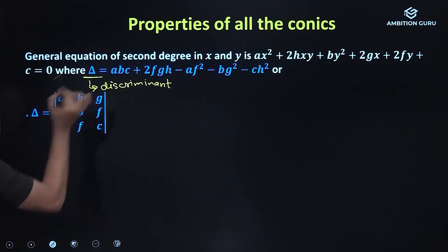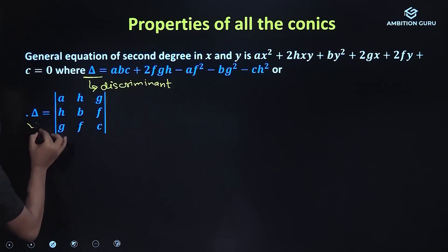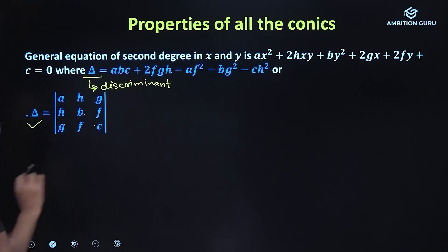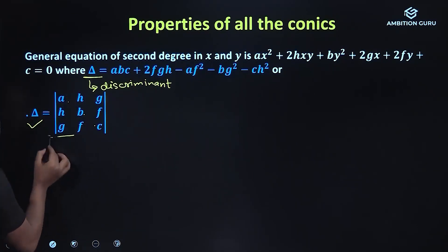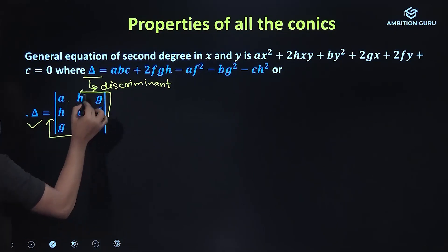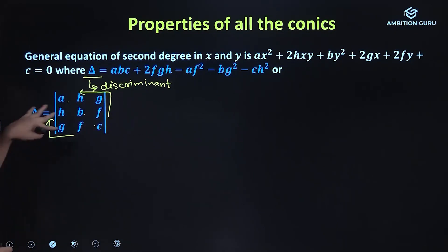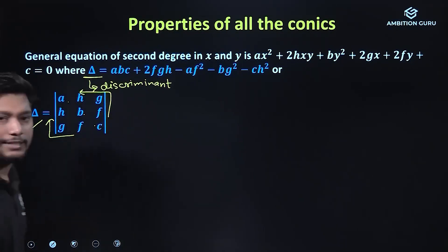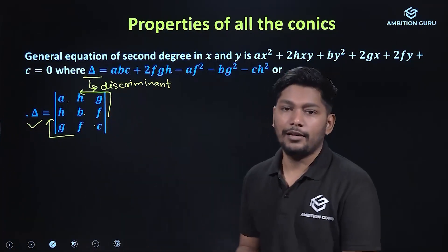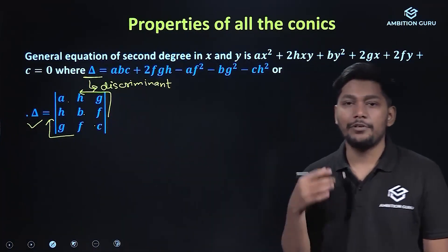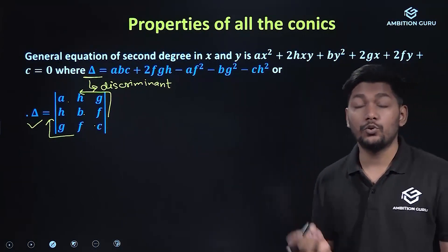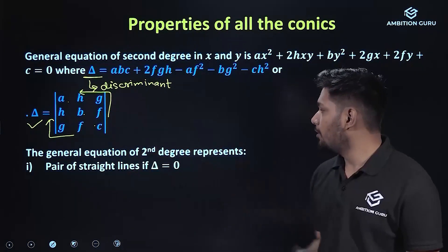In this equation, we have a matrix form with a, b, c and f, g, h. Delta is a determinant. If we determine the value of this determinant, we can identify the type of conic.